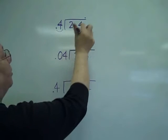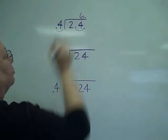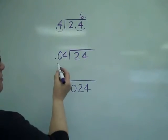Then 4 into 24, and the 6 is going to go directly above the 4.